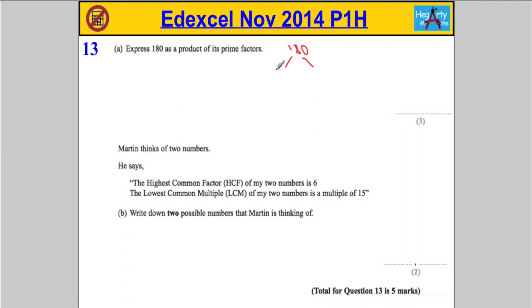So, 180 can be written as 2 times 90. 2 is a prime number, I'll draw a line under that, but 90 is not, so I've got to keep going. 90 can be written as 2 times 45. 2 is prime, 45 is not.